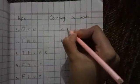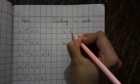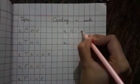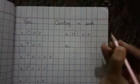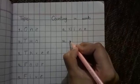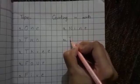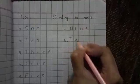Okay, next is nine: N, I, N, E — nine. And the last one is ten: T, E, N — ten.